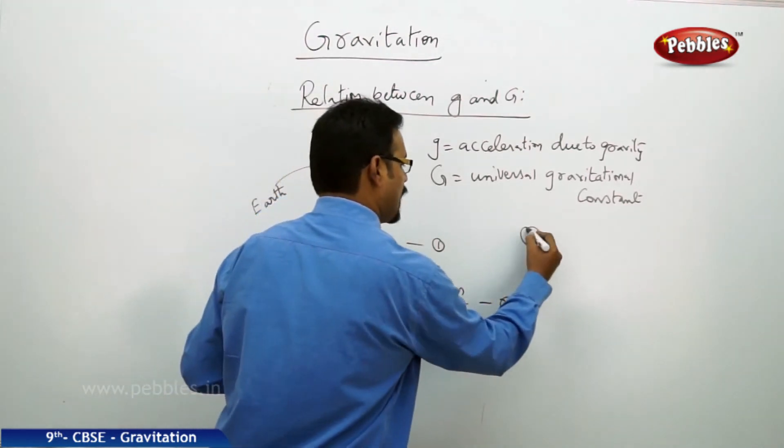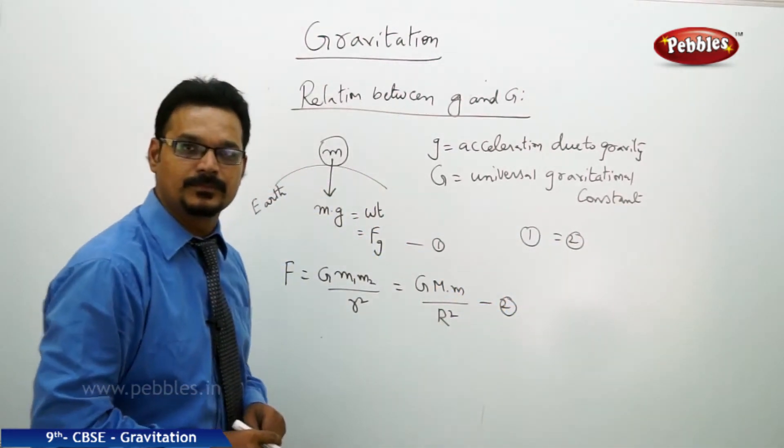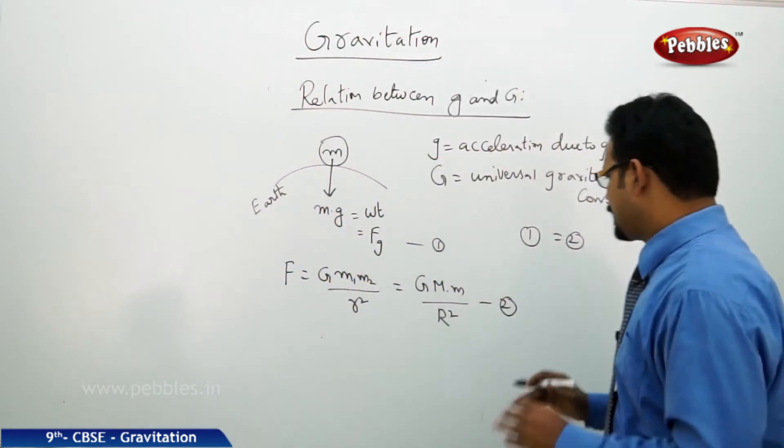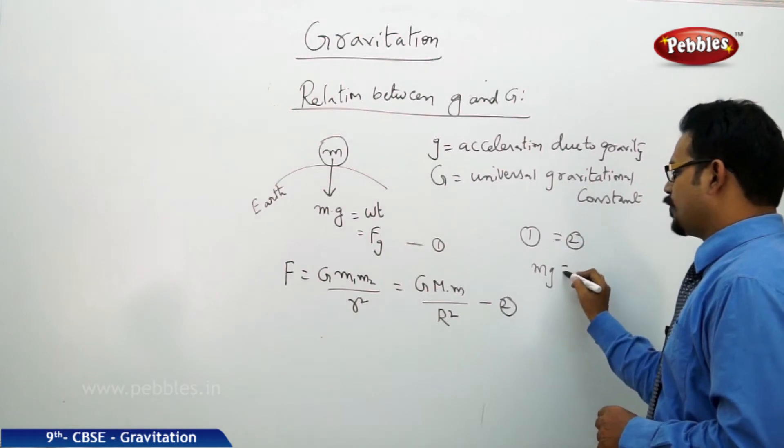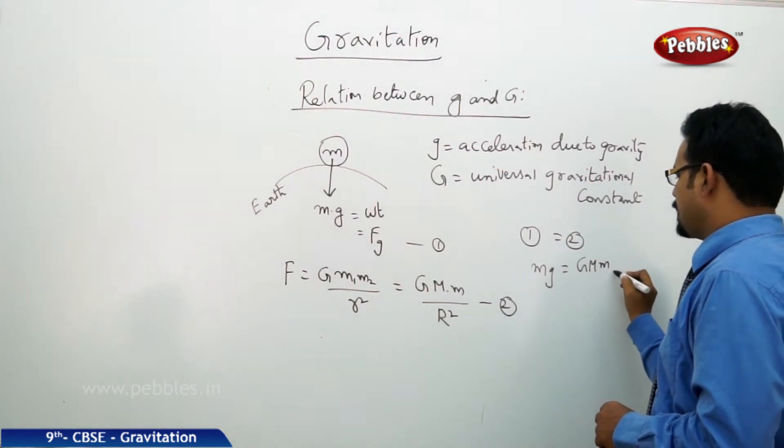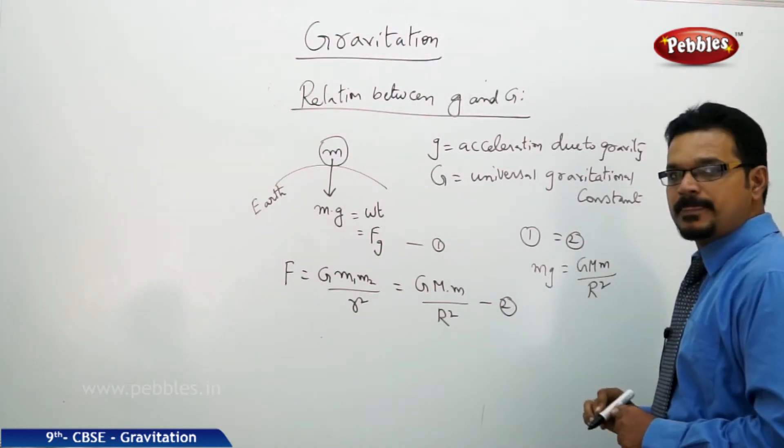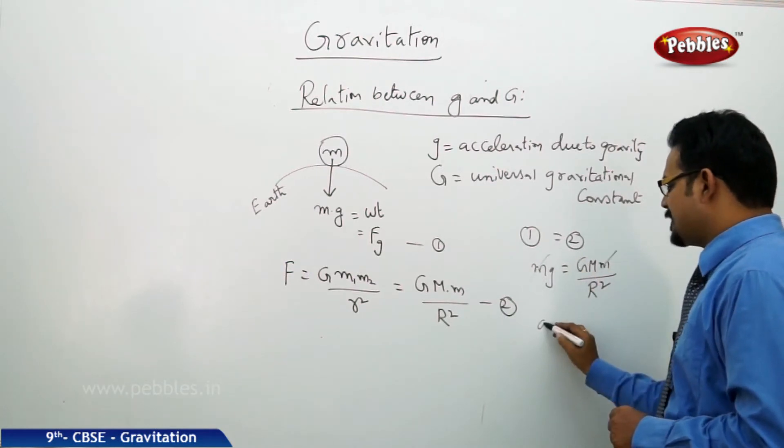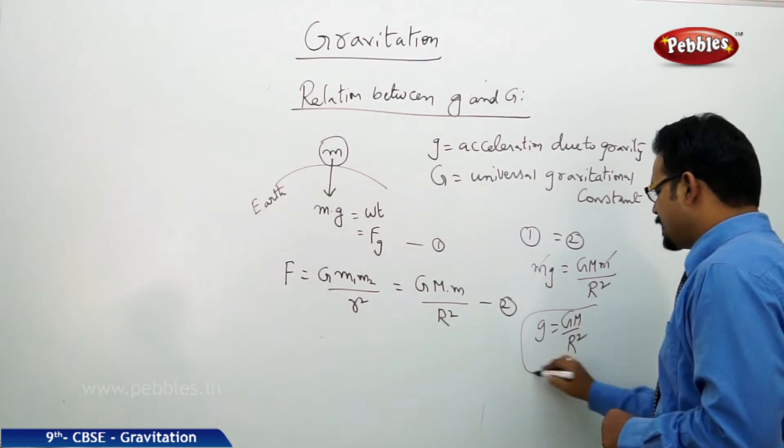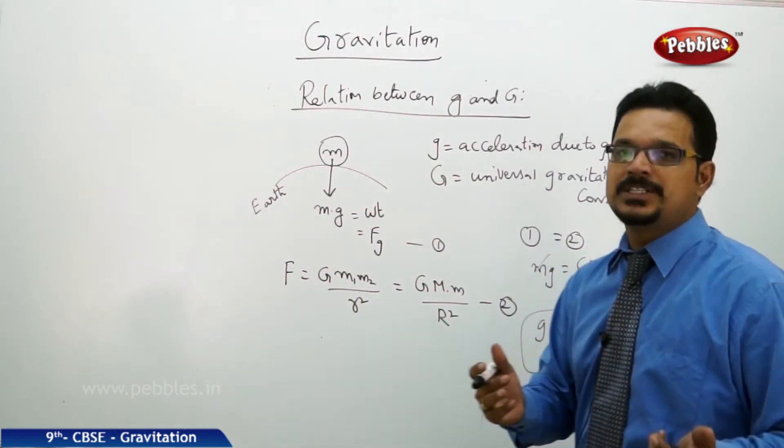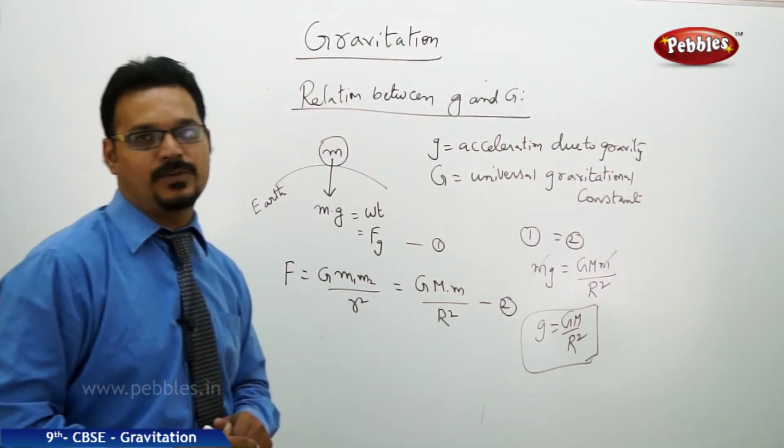So 1 and 2 are same. Let me equate them. So mg equals to G capital M small m by r square. So small m, small m is cancelled. What you got? Small g equal to G M by r square. So this is the relationship between small g and capital G: g equal to G M by r square.